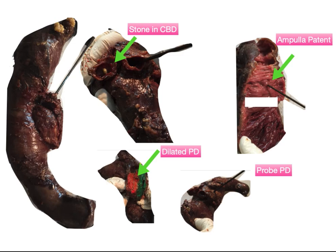Another important hint for pancreatic head tumors is dilatation of the pancreatic duct. Normally on the pancreatic neck margin, the duct lumen will barely be visible. But if you can make out a hole in the center of the pancreatic neck, that indicates dilatation of the pancreatic duct — a sign that there could be a tumor of the pancreatic head. You can also probe through the dilated pancreatic duct. The CBD may similarly be dilated.